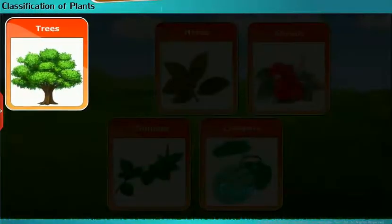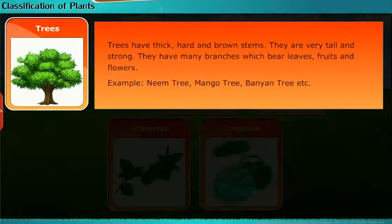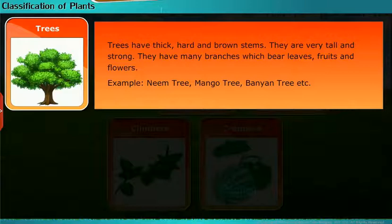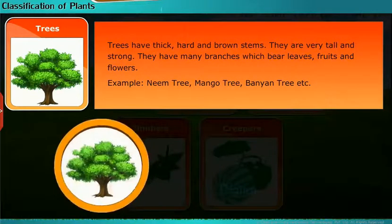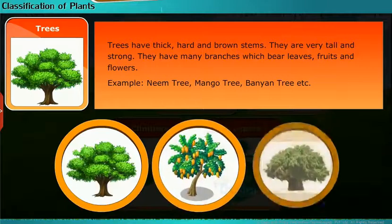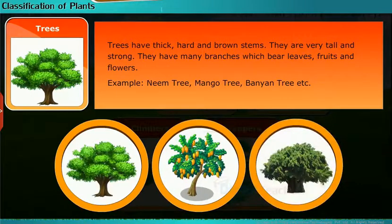Trees have thick, hard and brown stems. They are very tall and strong. They have many branches which bear leaves, fruits and flowers. Examples include the neem tree, mango tree, and banyan tree.